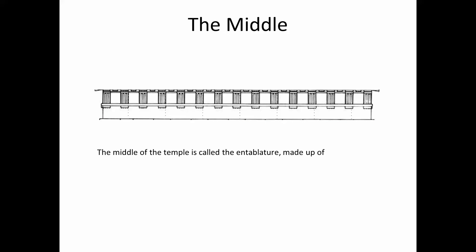Let's move on to the middle, and this is called the entablature. Now the middle is the part, this entablature, it sits on top of the columns and separates the columns from the pediment. Okay, so this is made up of the most complex collection of parts.